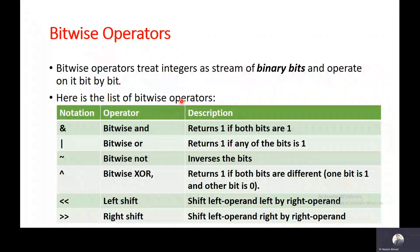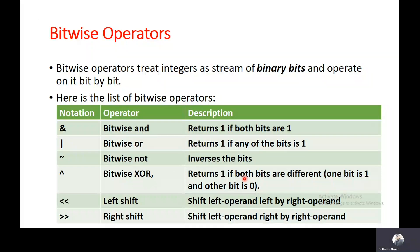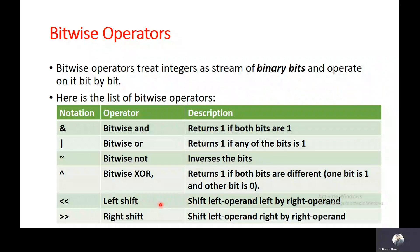Here is the list of bitwise operators. Bitwise AND returns 1 if both bits are 1. Bitwise OR returns 1 if any of the bits is 1. Bitwise NOT inverses the bits. Bitwise XOR returns 1 if both bits are different — one bit is 1 and the other is 0. We also have left shift and right shift operators, which shift the bits of a number either left or right, useful when multiplying or dividing a number by 2.